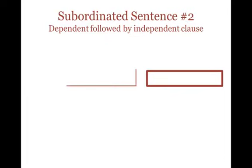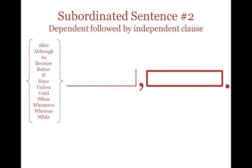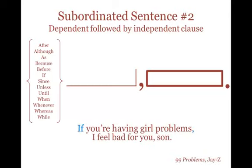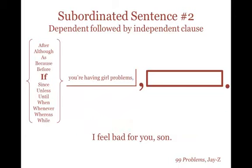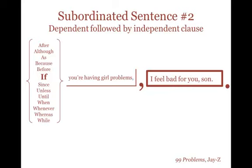The second way to write a subordinated sentence is with the dependent clause first. For example: 'If you're having girl problems, I feel bad for you, son.' Here, 'If you're having girl problems' is the dependent clause, and 'I feel bad for you, son' is the independent clause. See the difference? Notice that in this case our punctuation changes — if the dependent clause comes first, you do need a comma.